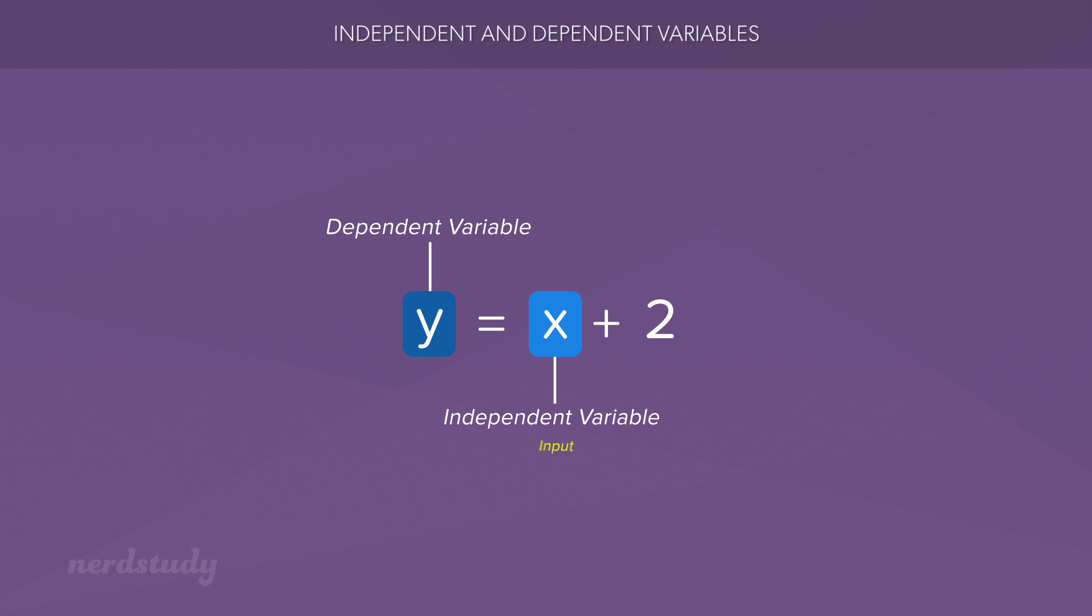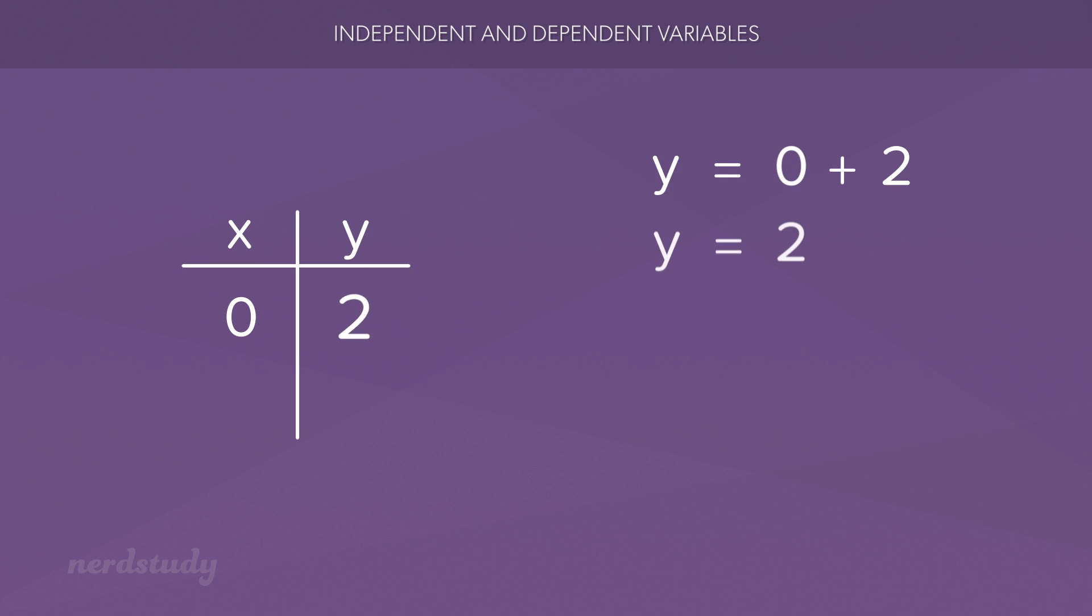You can think of x as the input and y as the output. As x changes, we want to know what happens to y. So, with respect to the equation y equals x plus 2, we might be thinking to ourselves, I wonder what y becomes when x is 0. We realize after simplifying that y becomes 2.